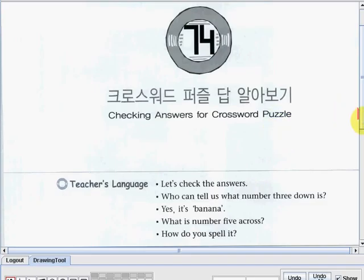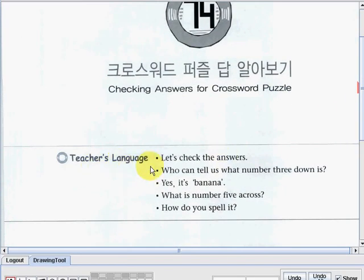Okay, now we have here the teacher's language, starting with the first one. Let's start reading. Let's check the answers. Who can tell us what number 3 down is? Yes, it's banana. What is number 5 across? And how do you spell it?